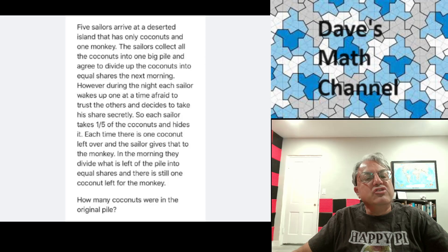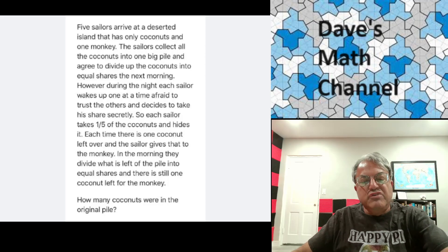So each sailor takes one-fifth of the coconuts and hides it. Each time there is one coconut left and the sailor gives that coconut to the monkey. In the morning, they divide what's left of the pile into equal shares and there's still one coconut left for the monkey. So the question is, how many coconuts were there in the original pile?